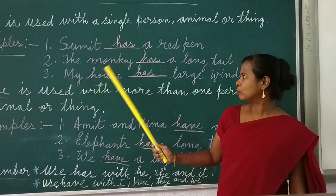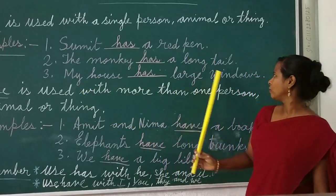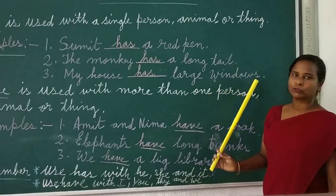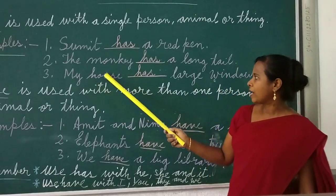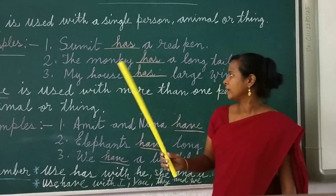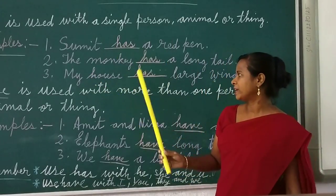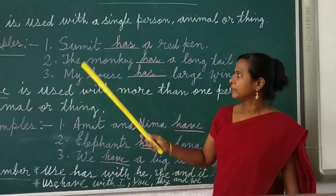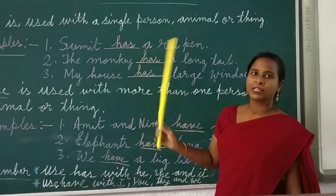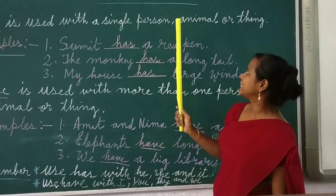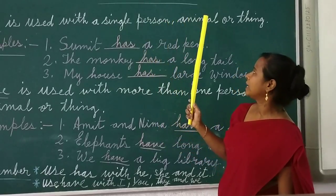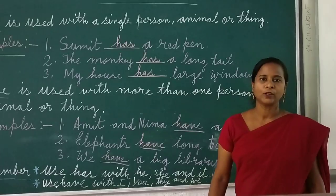Next one: My house has large windows. My house — only one house — that is why 'has' here. So it is clear when we use 'has': when we talk about a single person, animal, or thing, we will use 'has'.